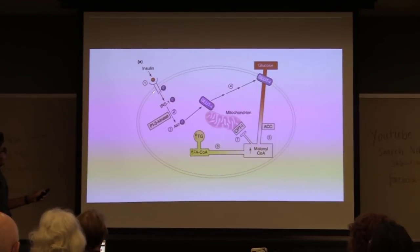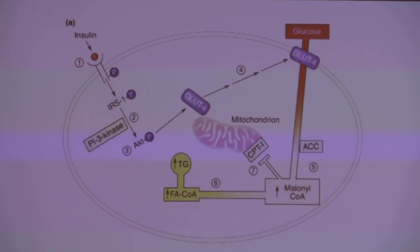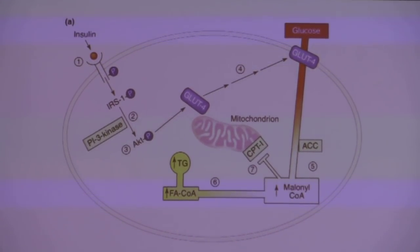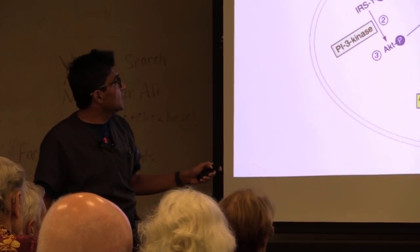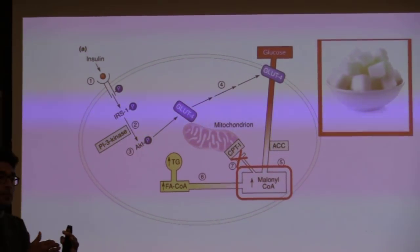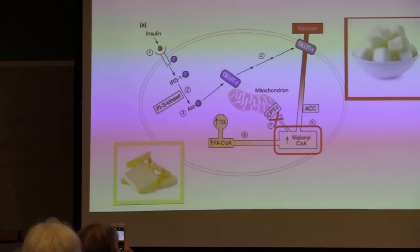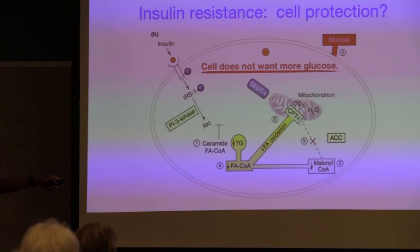Here is a cell: when insulin comes and attaches to the cell, it signals to put sugar into the cell through a receptor mechanism called GLUT4. If you're eating too much carbs, the extra sugar cannot be burned and gets converted to fat. If on top of extra carbohydrates you also eat a bunch of butter, all of this cannot be burnt — it will go straight to storage and overfill your fat cells.